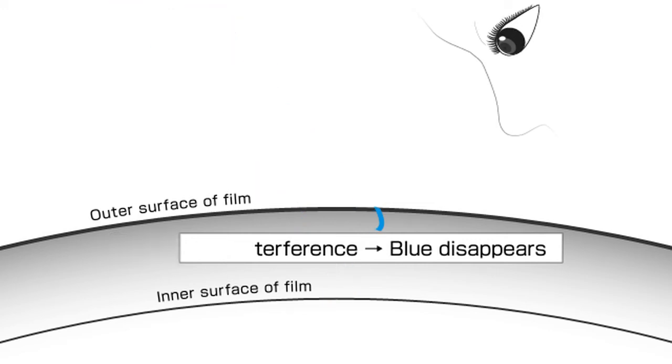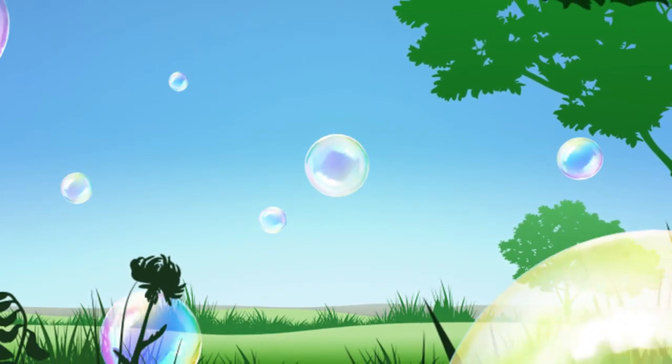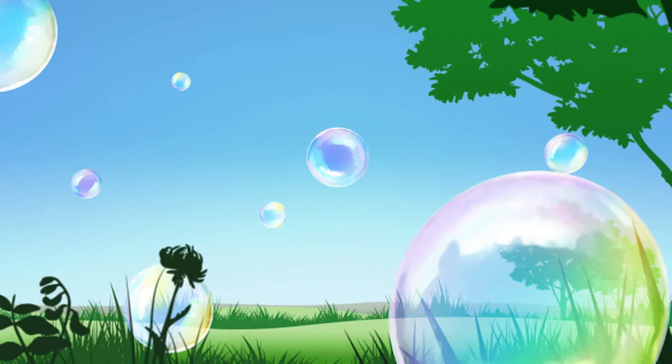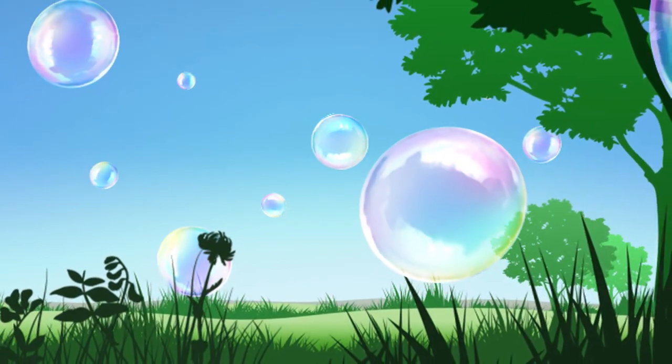Also, because the bubble's film is constantly moving, the colors appear and disappear. This is why light interference makes a soap bubble shine with constantly changing colors.